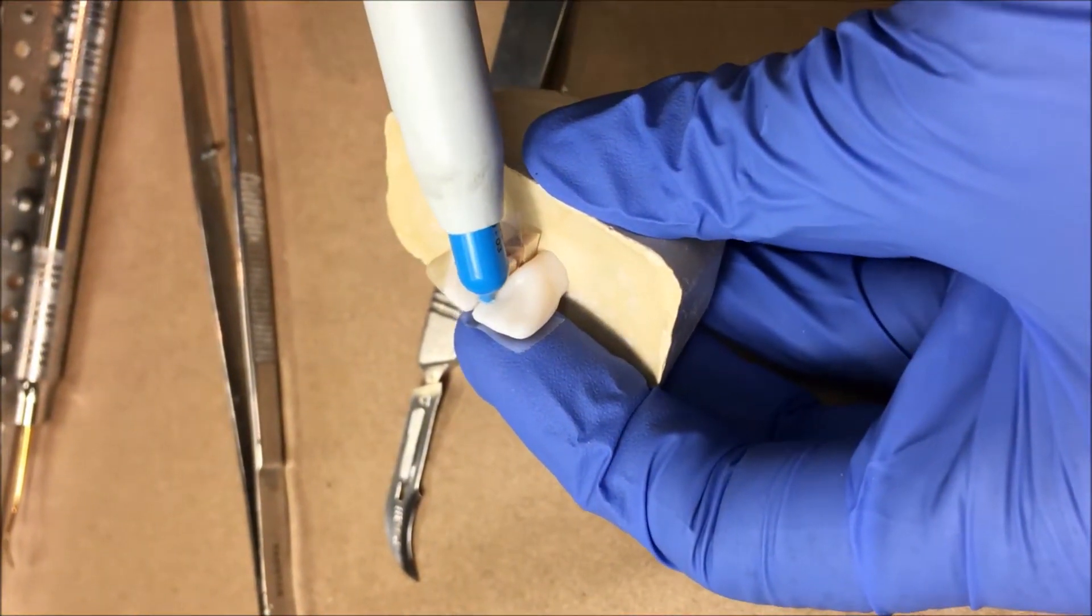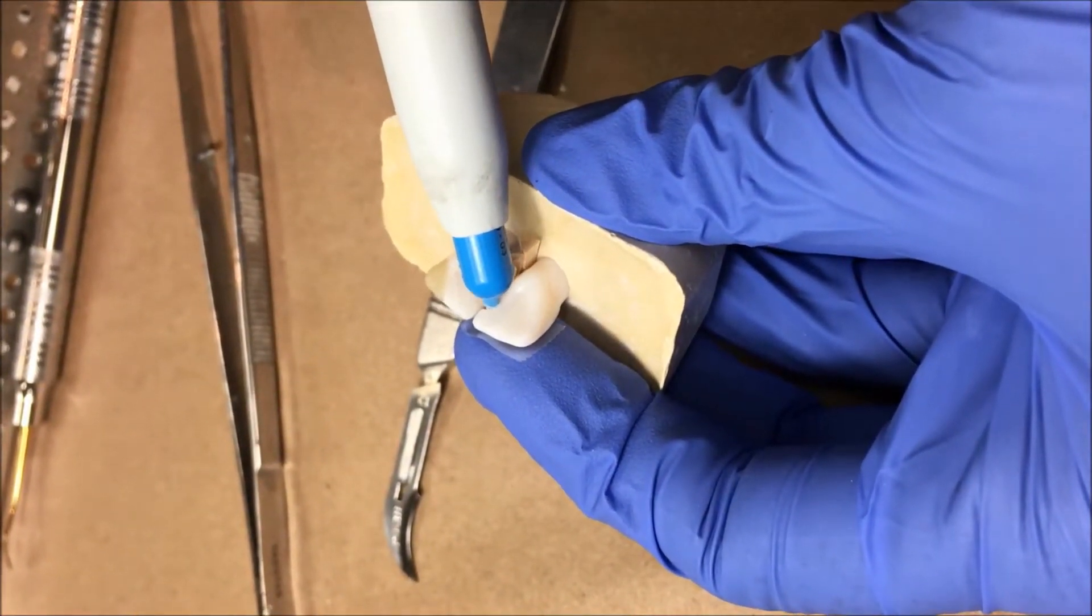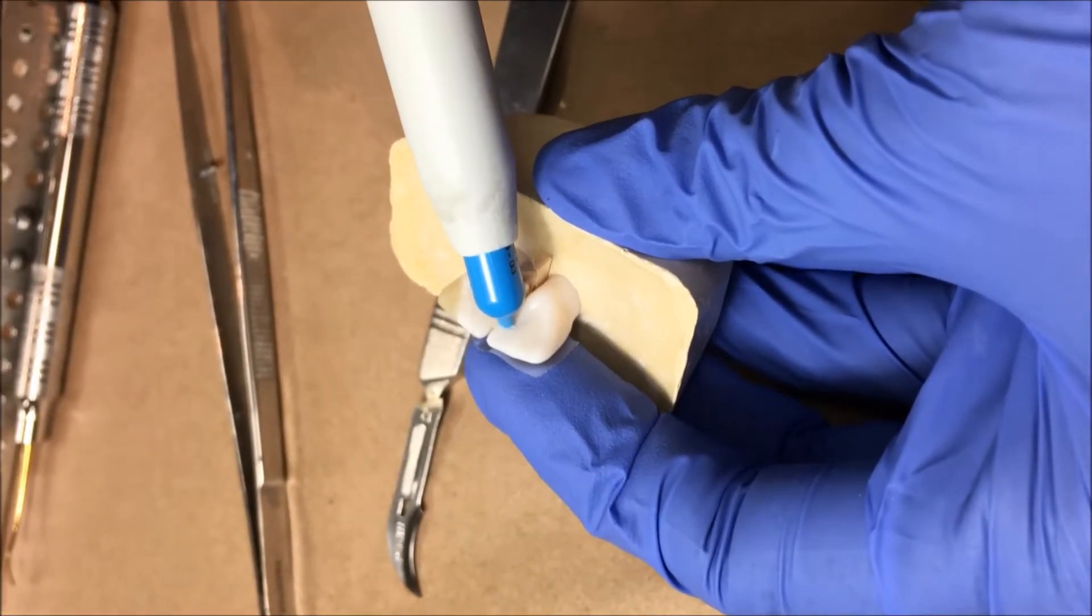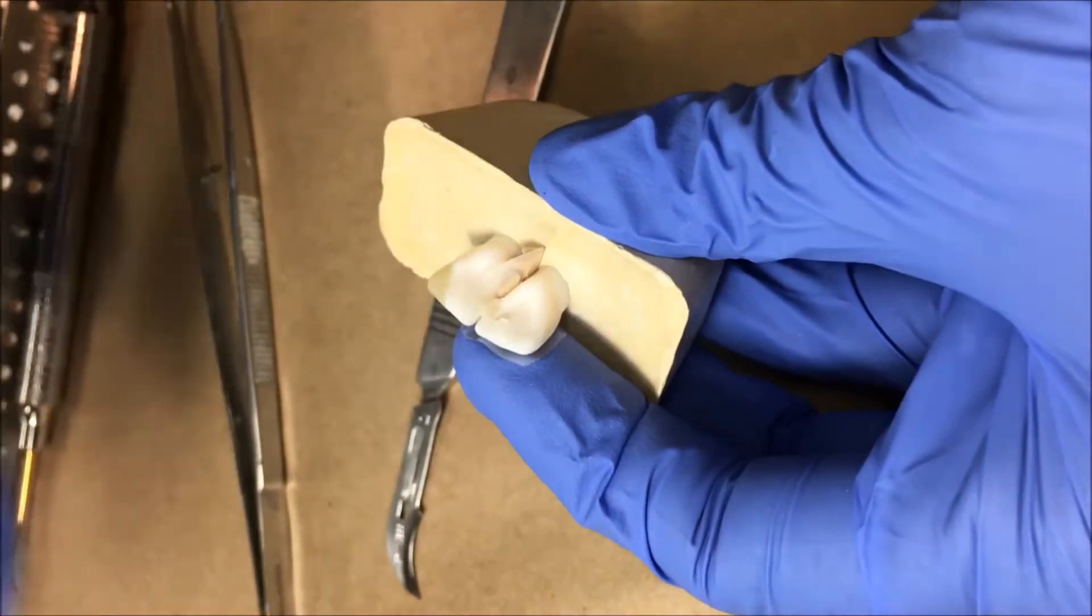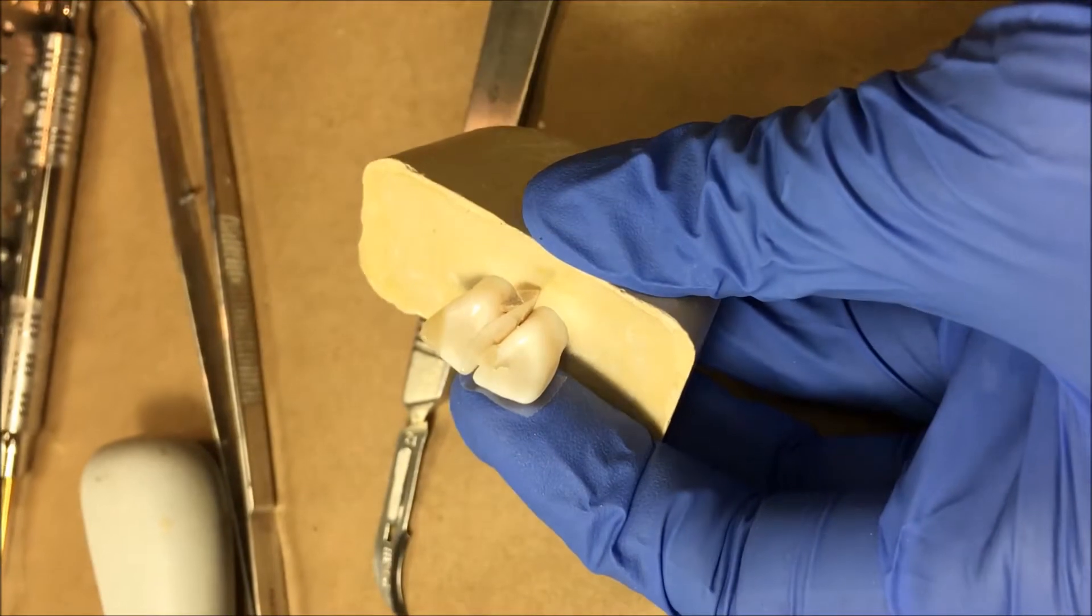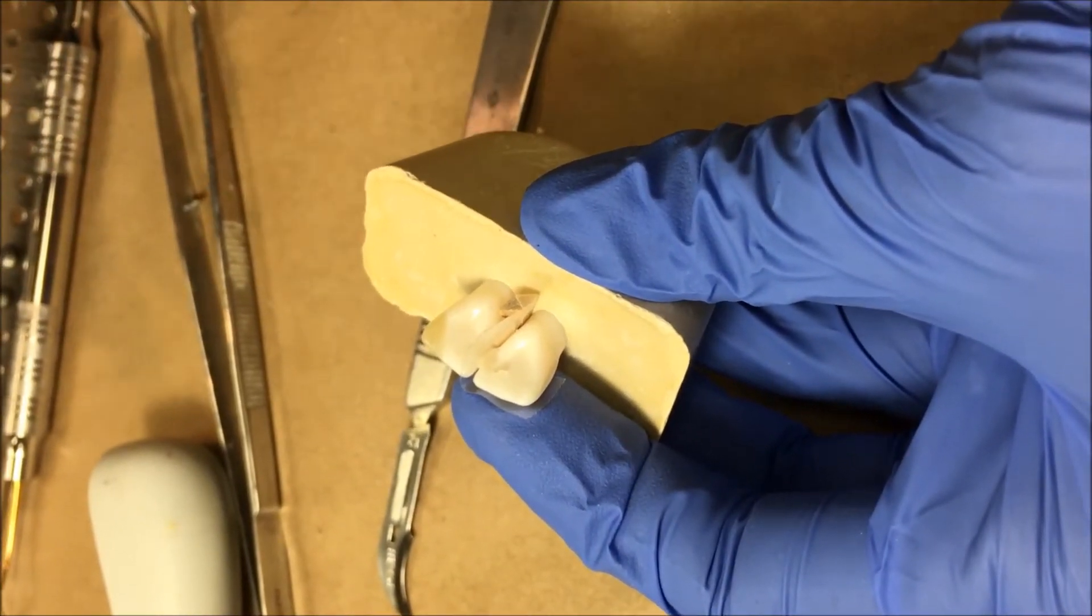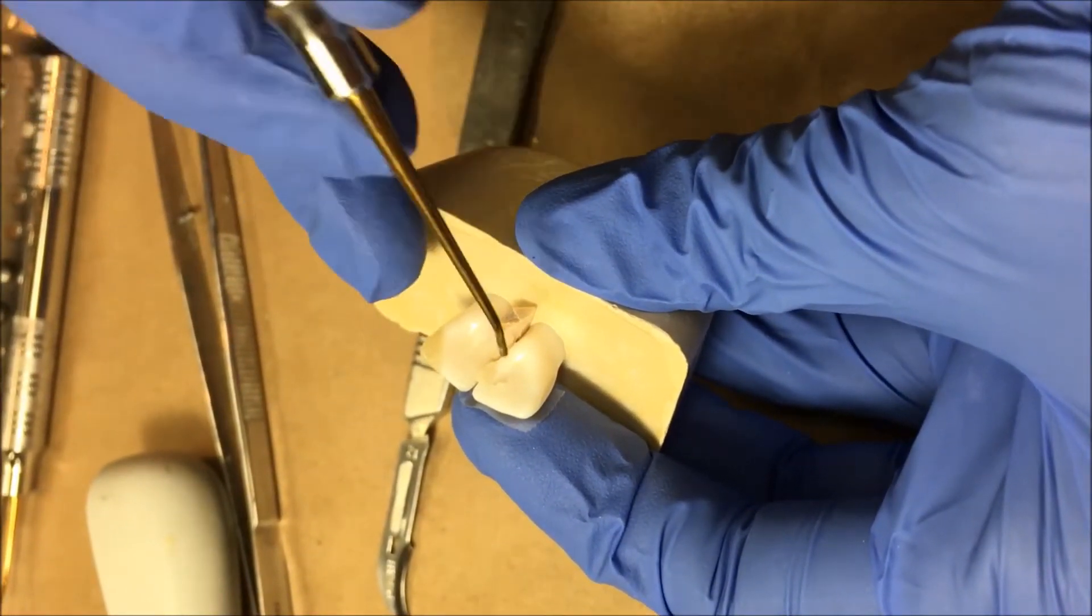Because this is so tiny and incipient I should be able to just bulk fill this. Notice that Dr. Hasland is putting the composite gun as close to the prep as possible and using the back pressure of the composite to fill the entire prep.